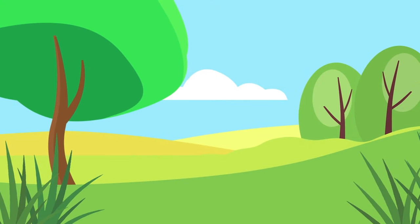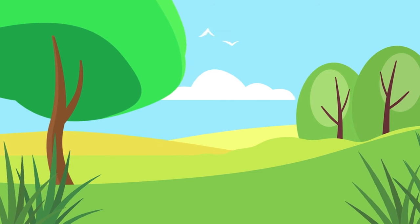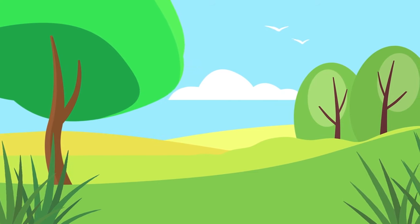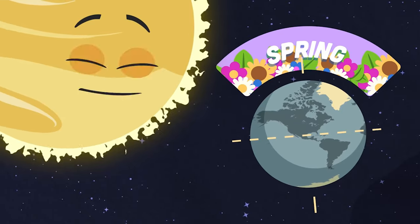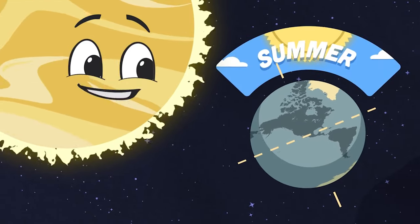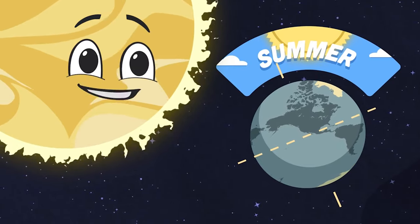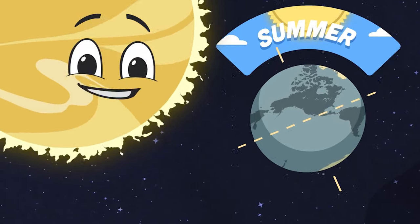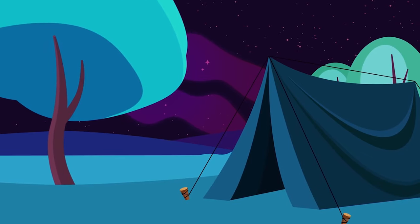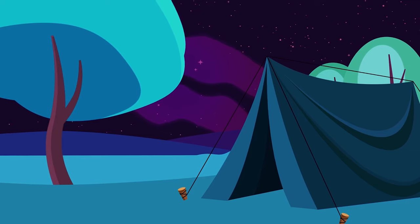After spring comes the warmth of the summer months. When the northern hemisphere is tilted fully towards the sun, the north fully warms up and summer has begun. In the summer you can swim and play outside until late, and go camping with your family — summer's warm and great.